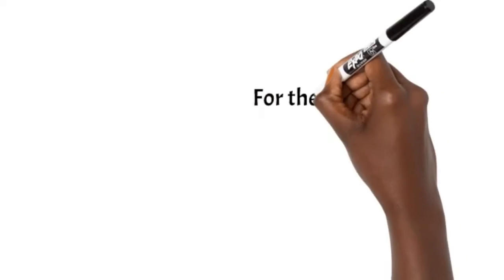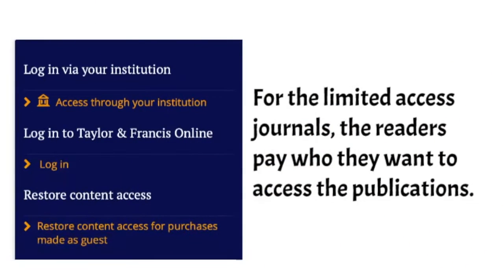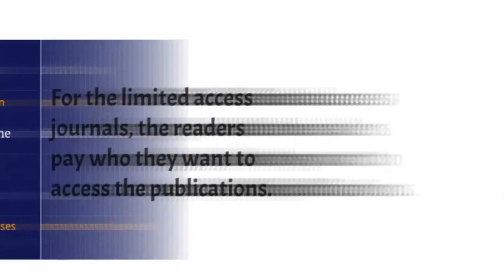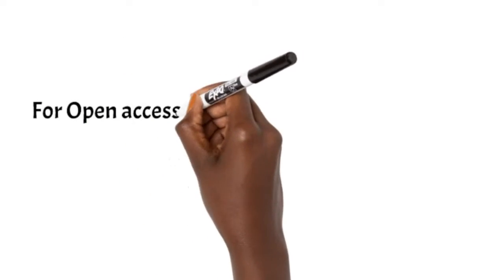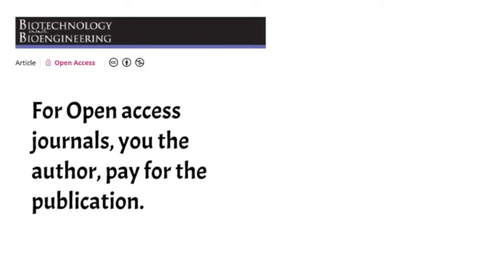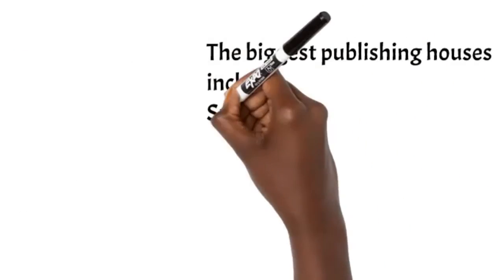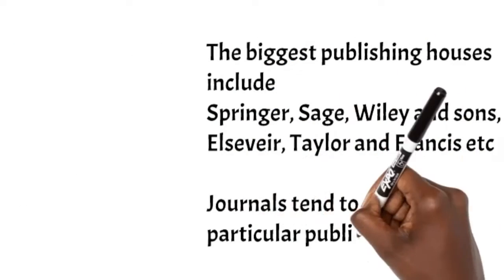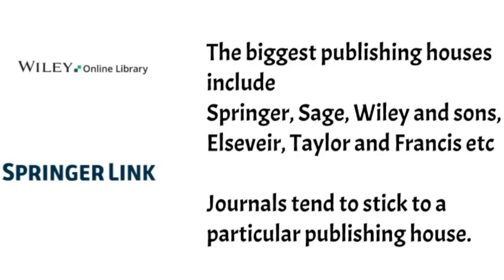For limited access journals, the readers pay when they want to access the publications. For open access journals, you — the author — will pay so that the publishing houses will make the publication available to anybody, not just institutions like universities. The biggest publishing houses include Springer, Sage, Wiley & Sons, Elsevier, etc.